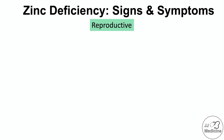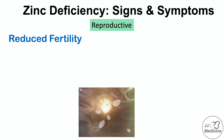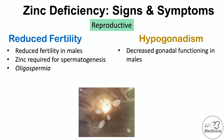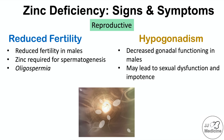There can also be reproductive issues with zinc deficiency. There can be reduced fertility, particularly in males, because zinc is required for spermatogenesis — the production of sperm — which can lead to reduced sperm counts known as oligospermia. Hypogonadism, or decreased gonadal functioning, can also occur, more commonly in males, and may lead to sexual dysfunction and impotence.